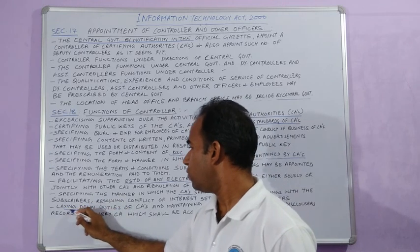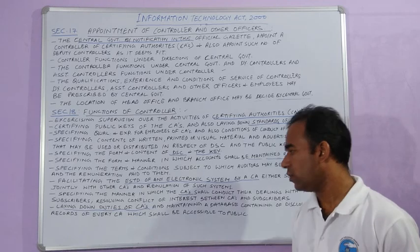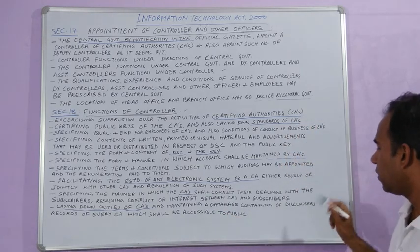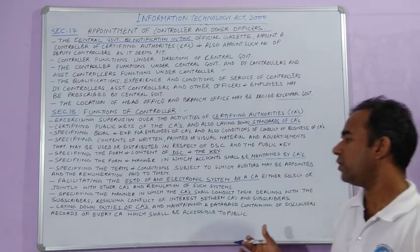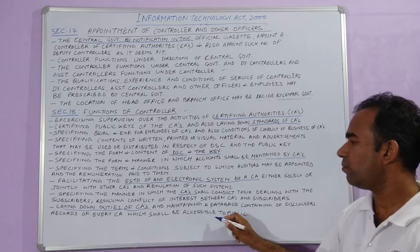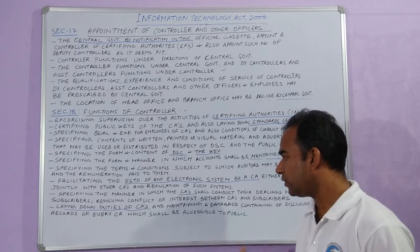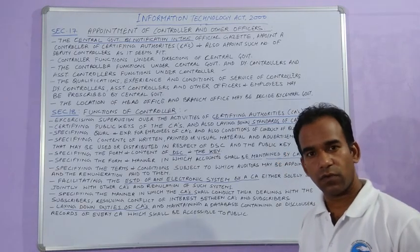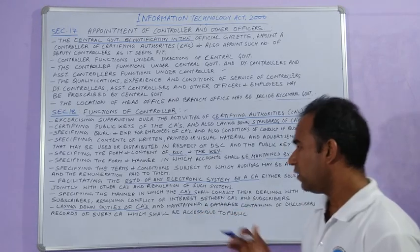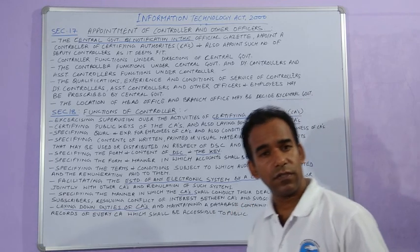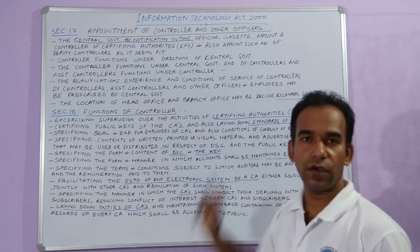The controller lays down the duties of certifying authorities and maintains a database containing disclosure records of every certifying authority, which shall be accessible to the public. So what records are publicly accessible and what are not is all to be decided by the controller.